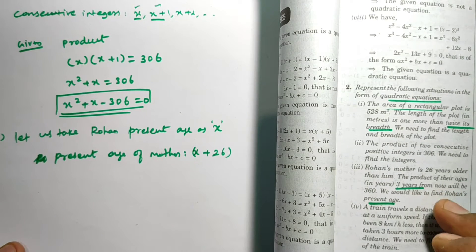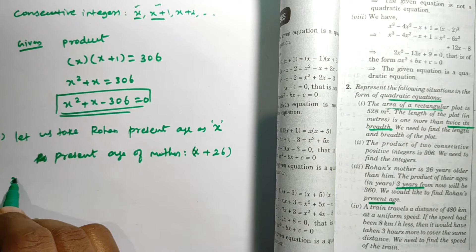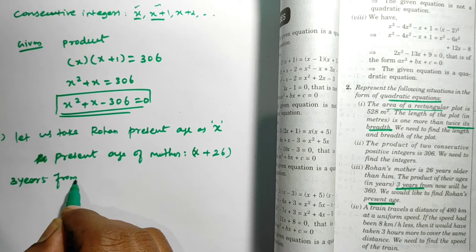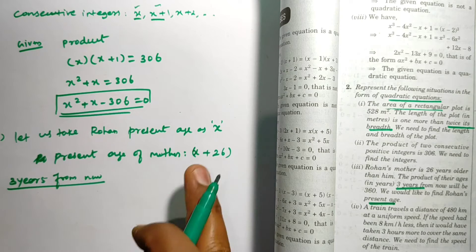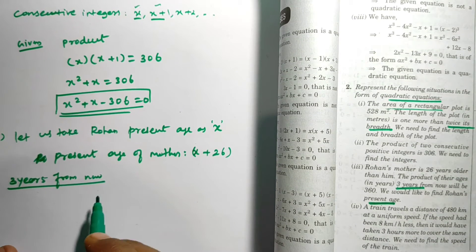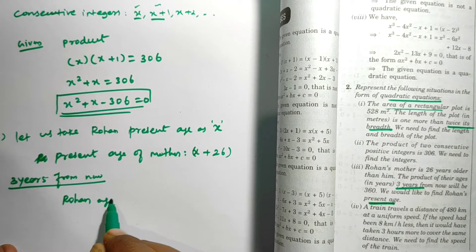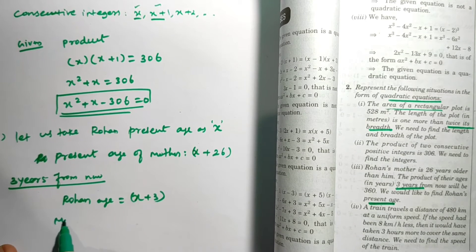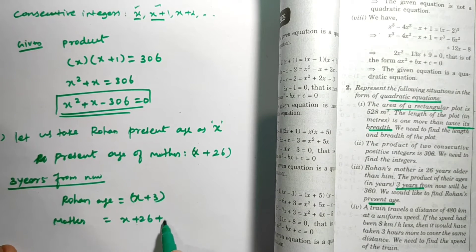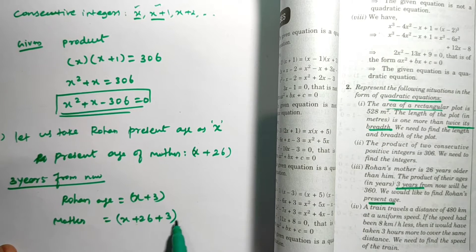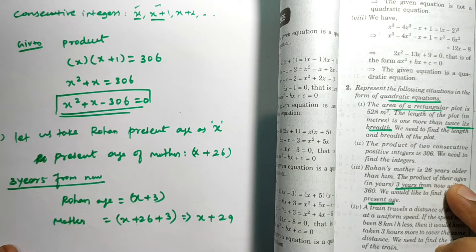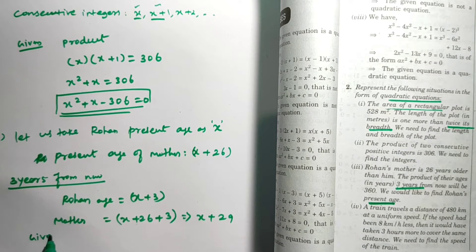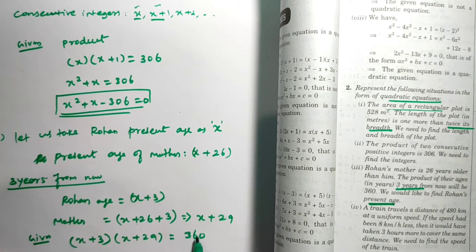Three years from now means we add 3 to the present ages. So Rohan's age after 3 years = x + 3, and his mother's age = x + 26 + 3 = x + 29. The product of their ages at that point is given as 360, so: (x + 3)(x + 29) = 360.